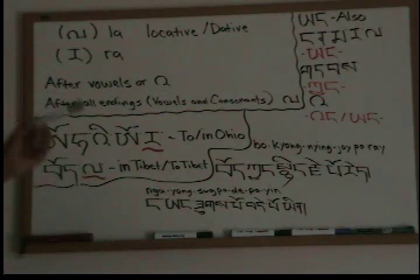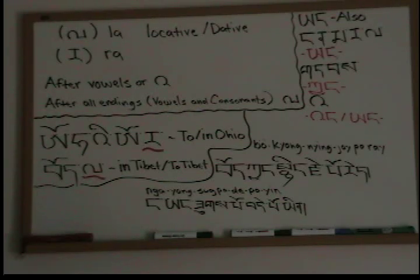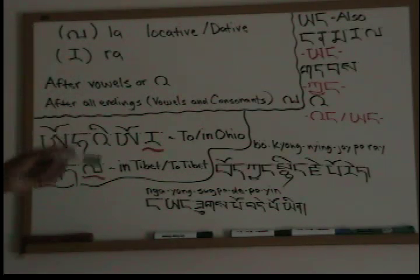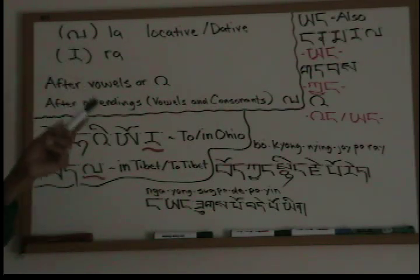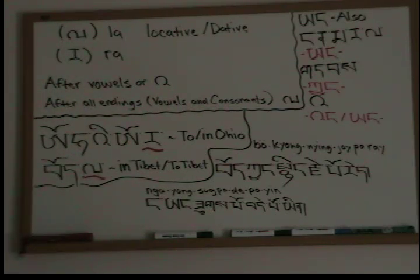Let's start with locative and dative. The first thing we learned before is that la — we learned la before as being locative. Now there are two variants in spoken Tibetan: we have la and ra.